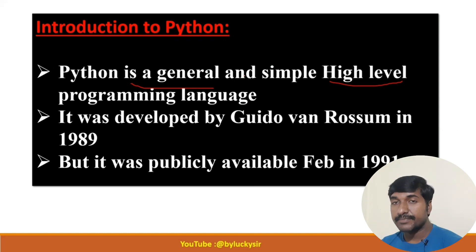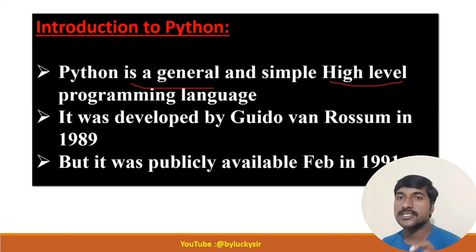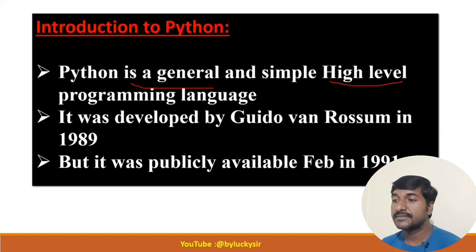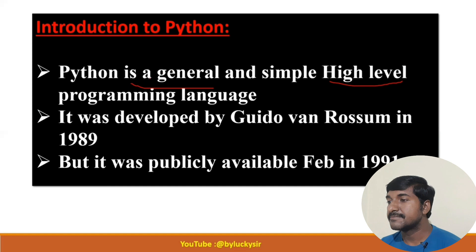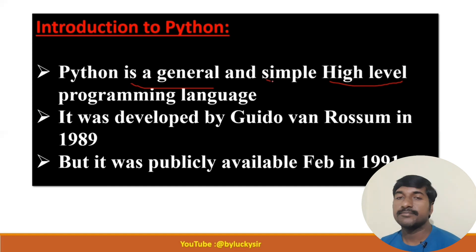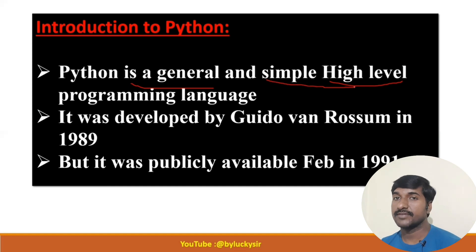General purpose means by using Python programming language we can develop any type of application, not only a specific application. So Python is a general purpose, simple, high-level programming language, and it is a very simple programming language.